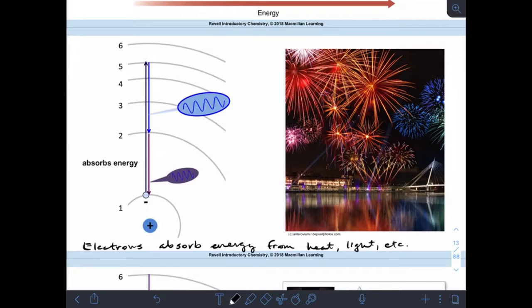Electrons absorb energy from various sources - it can be from heat, light, radiation, any number of things. Electrons live at very discrete energy levels. They only exist at particular energies - either one, two, three, four, five, or six. We talk about that in terms of quanta - quantum meaning a discrete amount. That's where we get the term quantum mechanics.